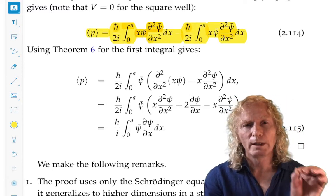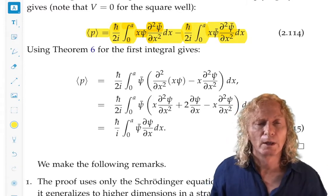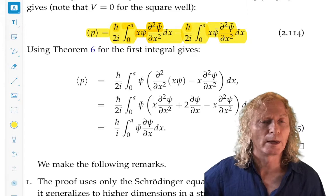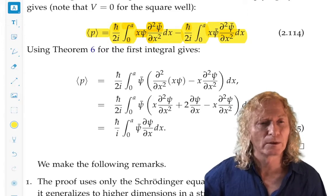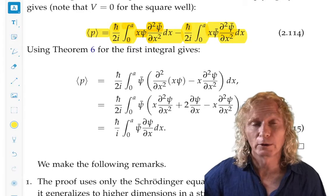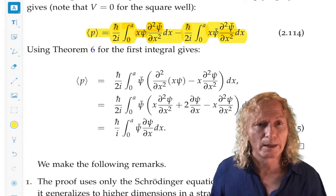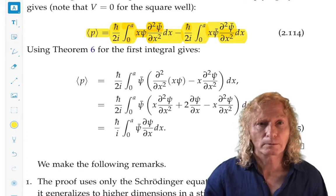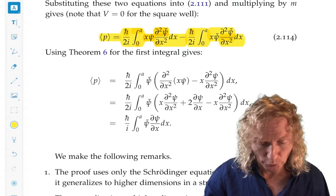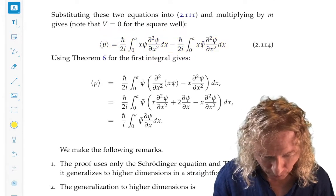Now, what we need to do is apply theorem 6. Theorem 6 was - we've referred to it as hermeticity. This was the condition of self-adjointness on the general Hamiltonian corresponding to the square well. If we apply theorem 6 to the first integral in the expression, this expression.